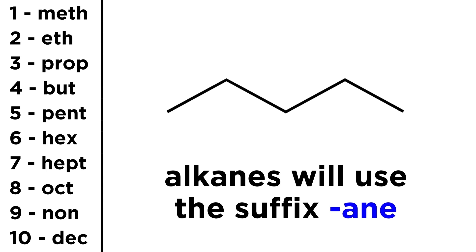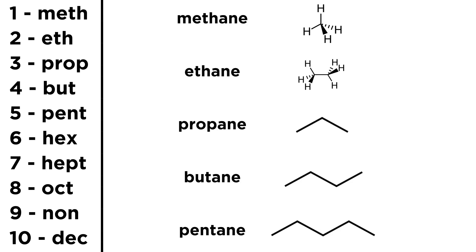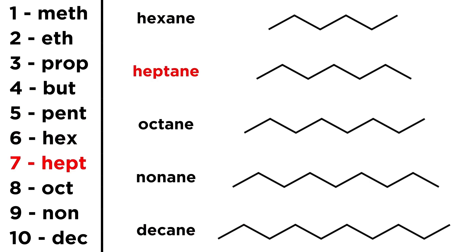If we are describing alkanes, we will use the suffix "-ane". So if we are considering only straight-chain alkanes, we just take the prefix that corresponds to the number of carbons in the molecule and add the suffix to get methane, ethane, propane, butane, pentane, hexane, heptane, octane, nonane, and decane.